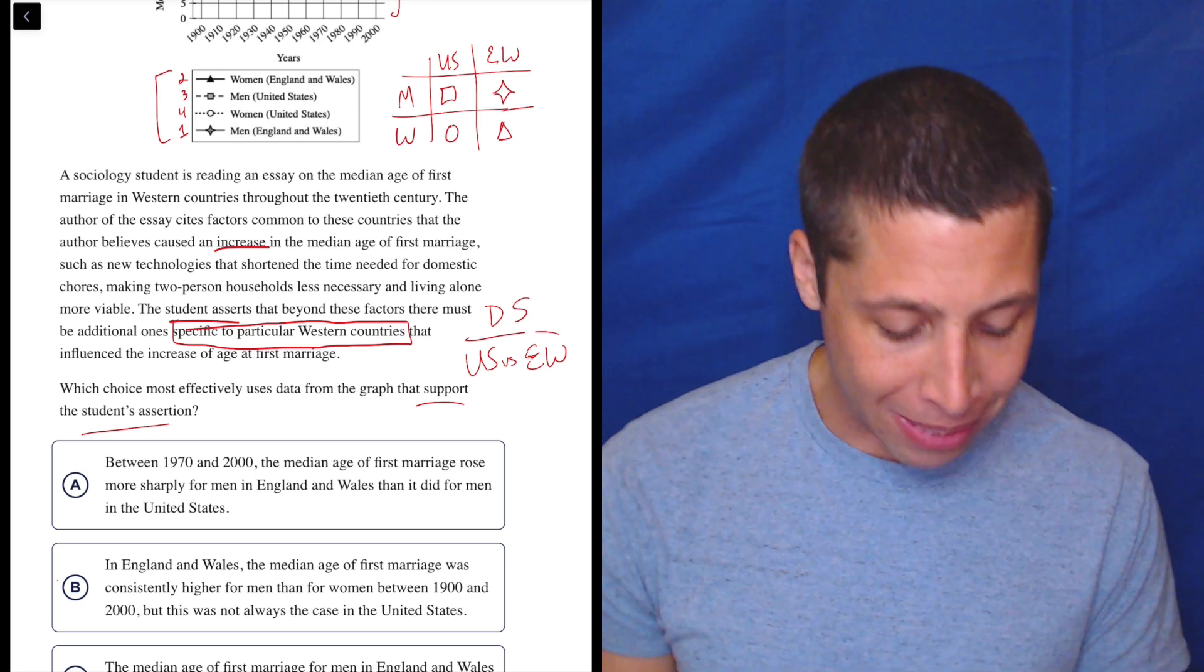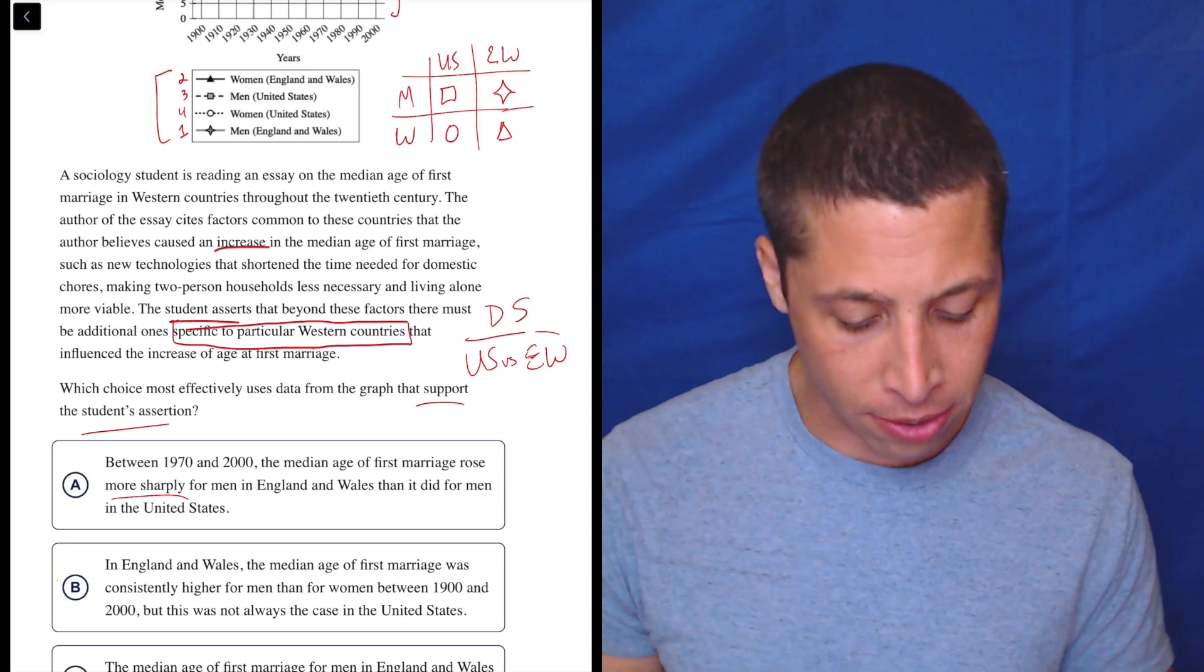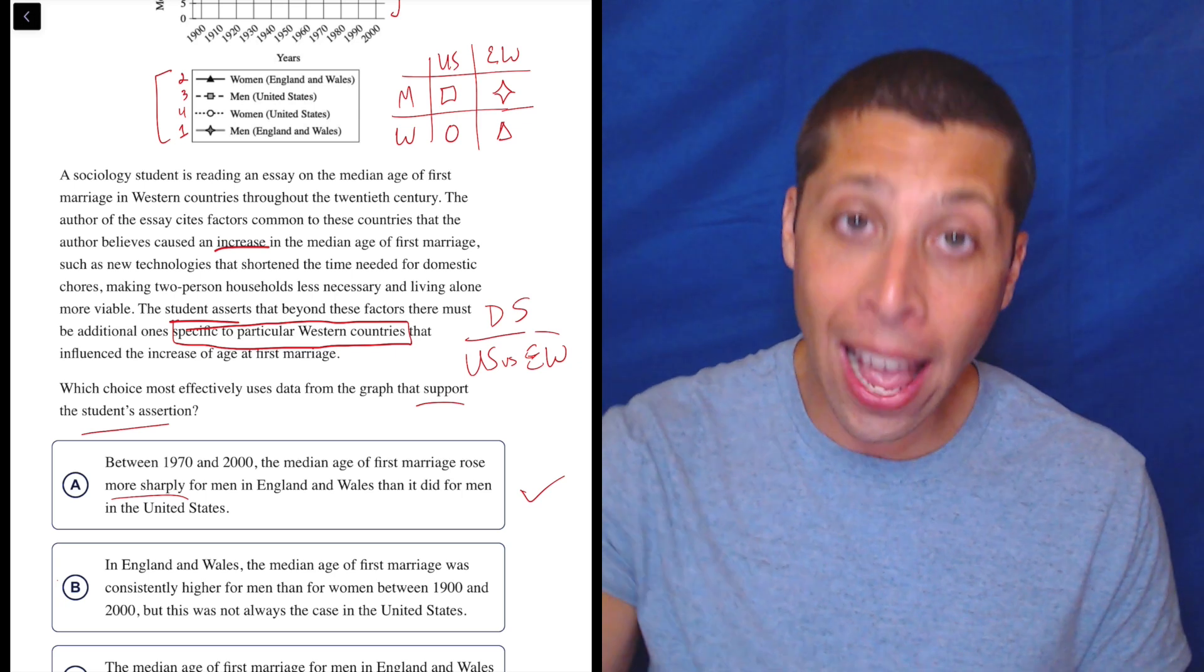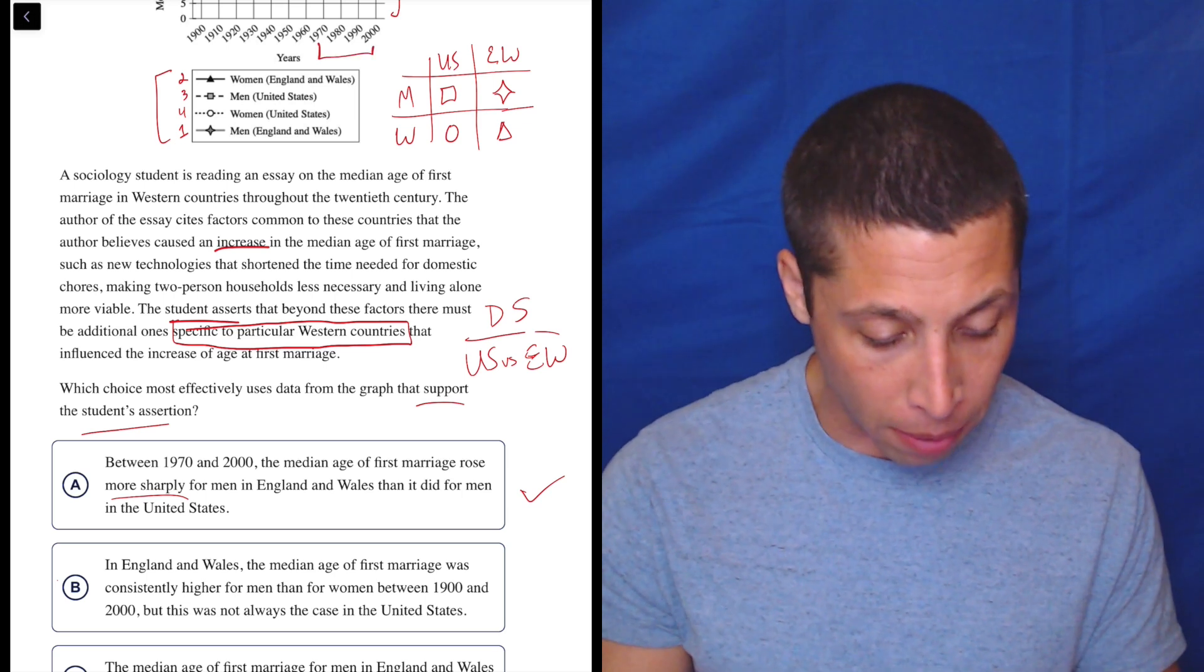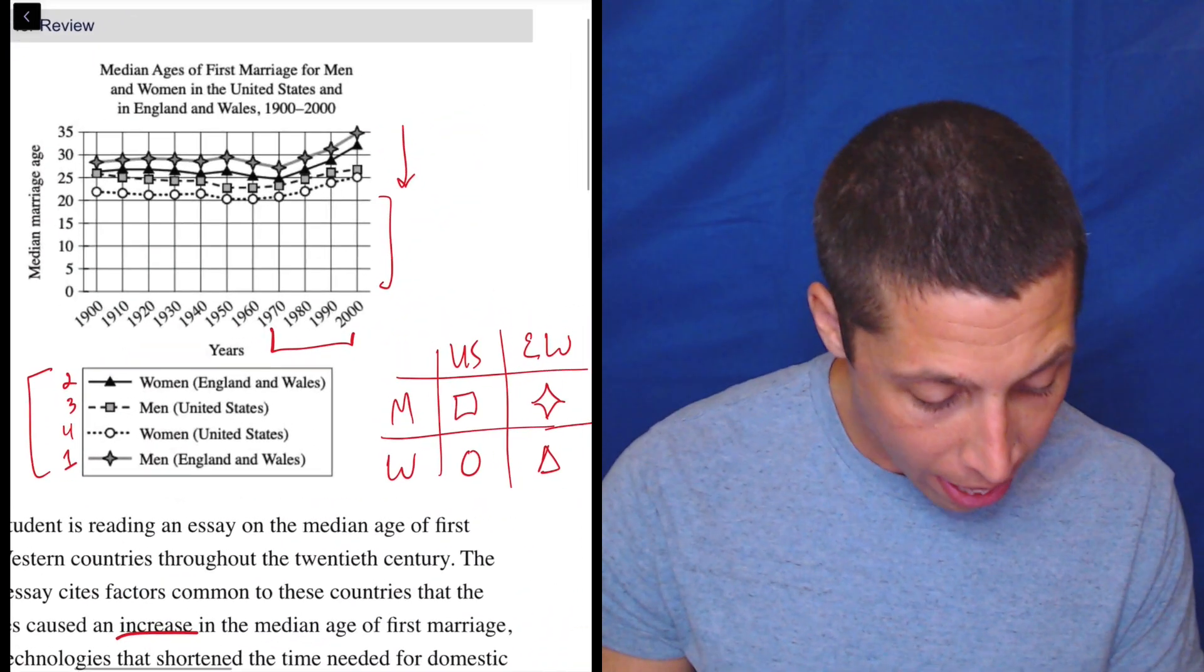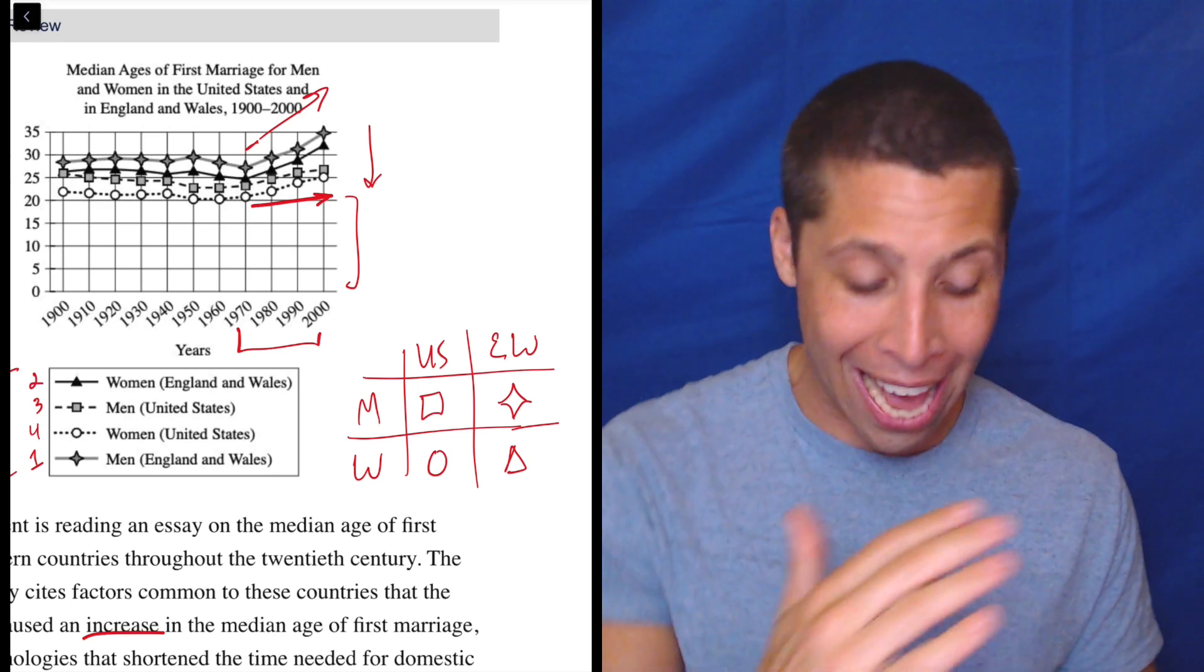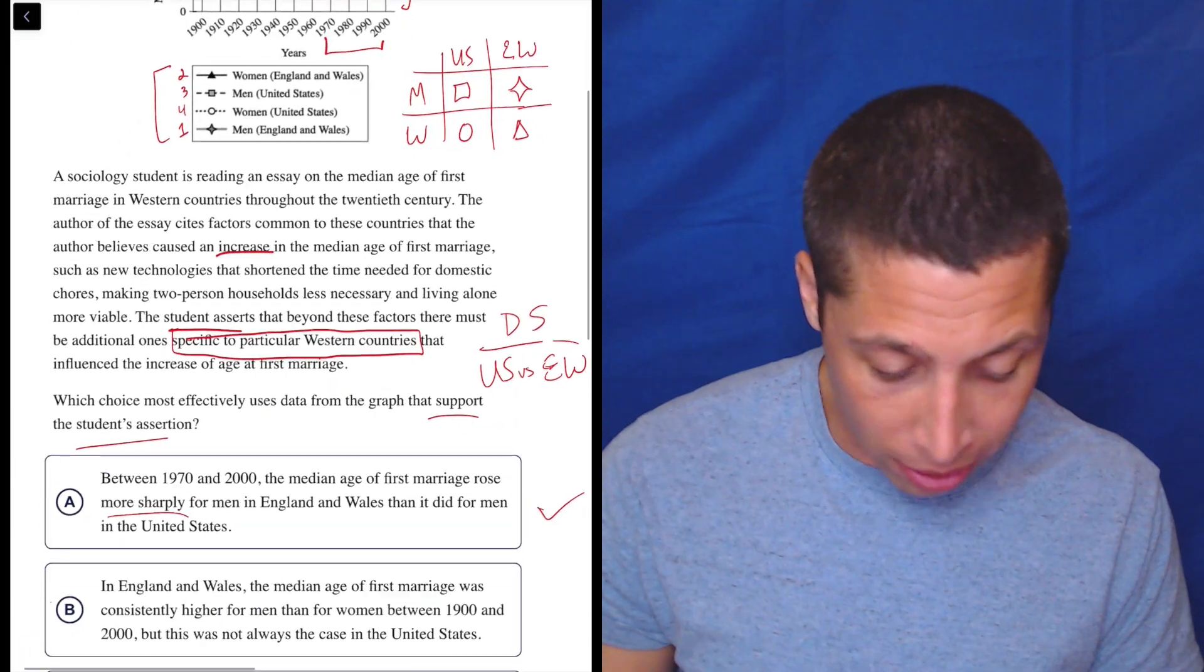A, between 1970 and 2000, the median age of first marriage rose more sharply for men in England and Wales than it did for men in the United States. So right away, that already hits my dumb summary here. It seems to be contrasting the US versus England and Wales. That seems like the right idea. Now, is it accurate? Is that true from 1970 to 2000? So 1972, we are looking for the men in England versus the men in the US. So that is going to be the diamond versus the square. And sure enough, the diamond seems to be going up much faster than the square. It's kind of tucked in there, but the square seems to be increasing, but a little flatter. So that does seem like a difference to me. I don't know if it's the right difference, but it seems to check the boxes for now. So let's leave it at that.